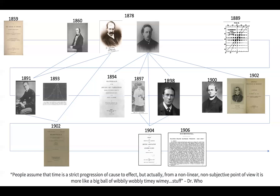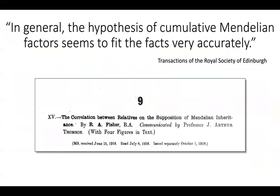Now enter 26-year-old Ronald Fisher. By this point, the divide in the field was older than Fisher himself, and it had profoundly shaped genetics and evolutionary biology. Fisher was in an ideal position to bridge the divide. He had been trained as a mathematician, but was working in Cambridge, the home of the Mendelian experimentalists. He was not locked into a set of beliefs, but was open to considering the possibility of another solution. In 1916, his paper was communicated to the Royal Society with the mathematical proofs demonstrating that, in general, the hypothesis of cumulative Mendelian factors seems to fit the facts very accurately. This was the first formal reconciliation between Mendelian genetics and biometry — a description of polygenic traits.